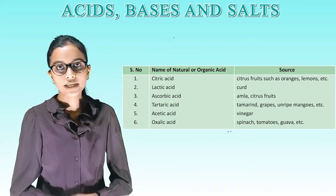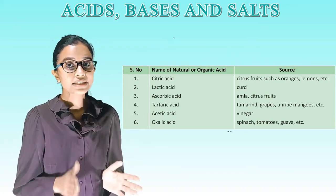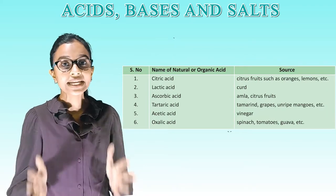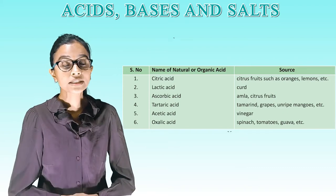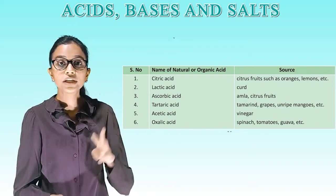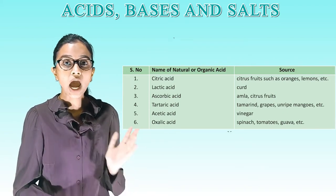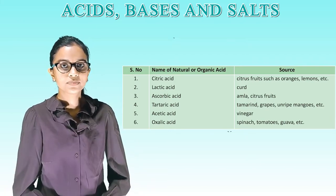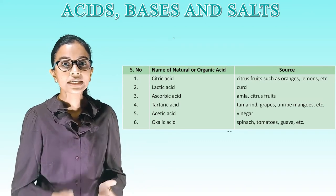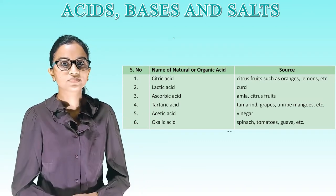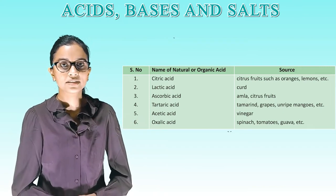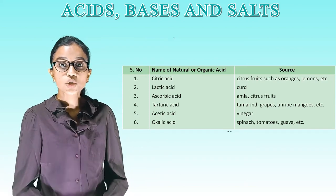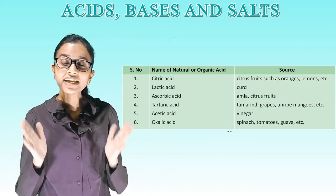Number 1: Citric acid — source: citrus fruits such as oranges, lemon, etc. Number 2: Lactic acid — source: curd. Number 3: Ascorbic acid — source: amla, citrus fruits. Number 4: Tartaric acid — sources: tamarind, grapes, unripe mangoes, etc. Number 5: Acetic acid — source: vinegar. Number 6: Oxalic acid — source: spinach, tomatoes, guava, etc.